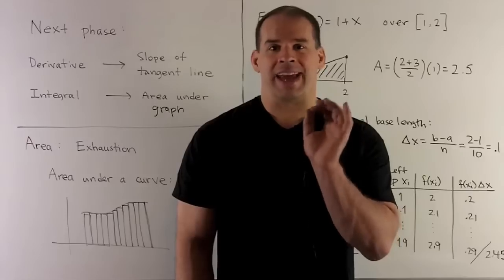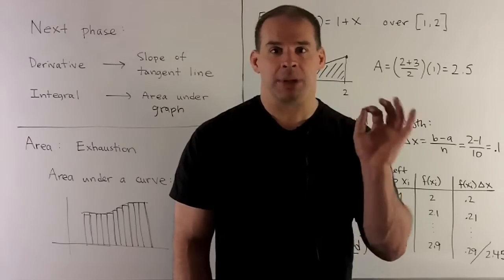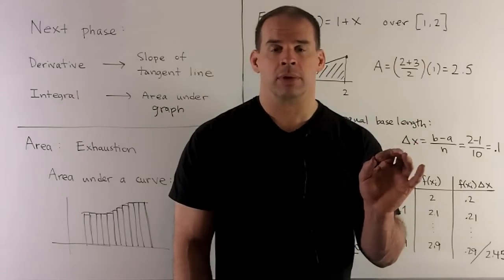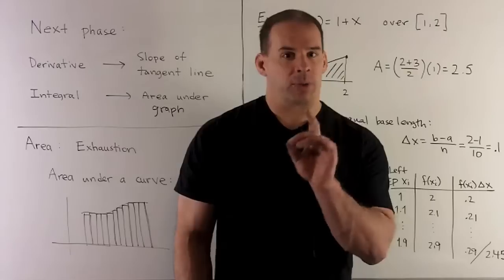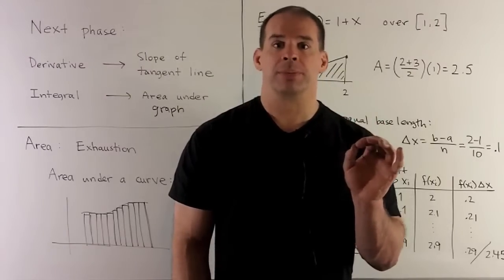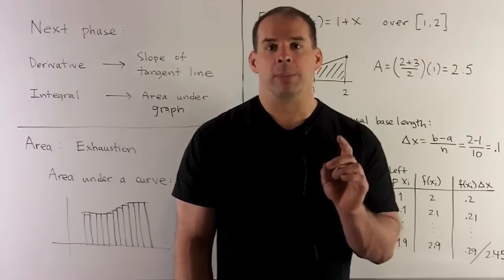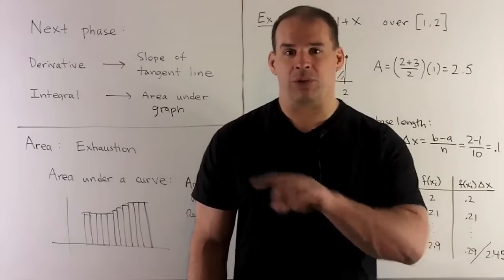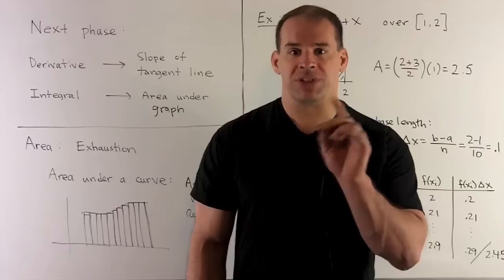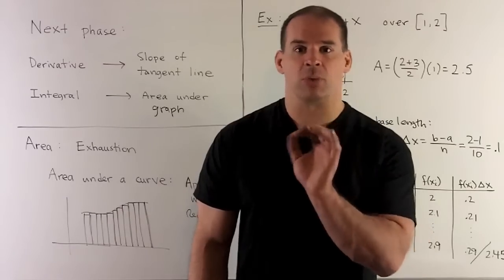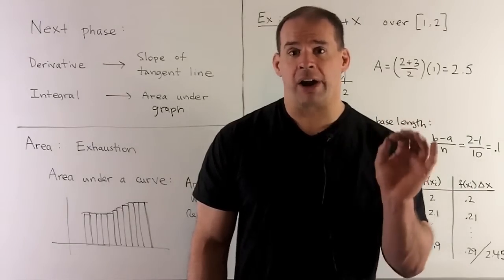So how do we get the area of an object in the plane? The method we're going to use is exhaustion. This idea goes back to the ancient Greeks. We have a complicated region in the plane. We're going to fill it up with simple regions, and those simple regions we'll know how to take their area.